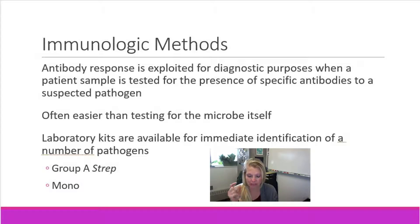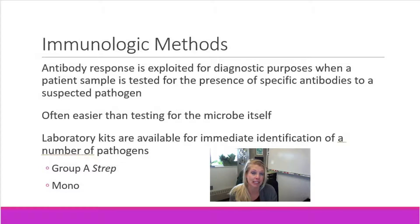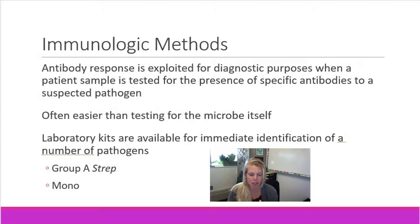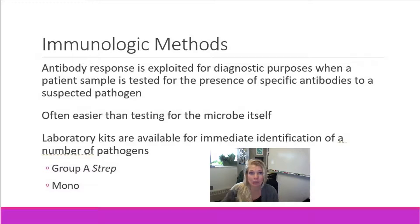There are many kits available in the clinical lab called rapid kits. You're probably familiar with the rapid Group A strep test — within 15 minutes you know if you have strep or not. There's also a rapid mono kit. The rapid COVID testing is all done using immunologic methods.